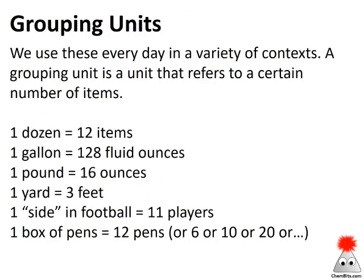Grouping units are something we're very accustomed to and use all the time but don't think about. A grouping unit is just anything that refers to a group of some other items. The one that always gets brought up is a dozen, which is 12 items. But we can also think about a gallon — a gallon is a grouping unit, it's a group of 128 fluid ounces. Or a pound is 16 ounces. A yard is three feet. These are all grouping units.